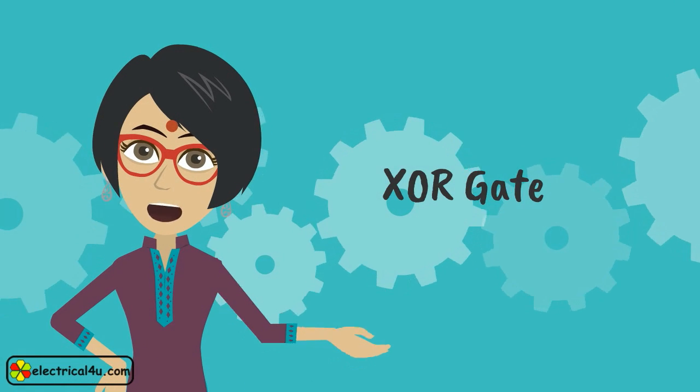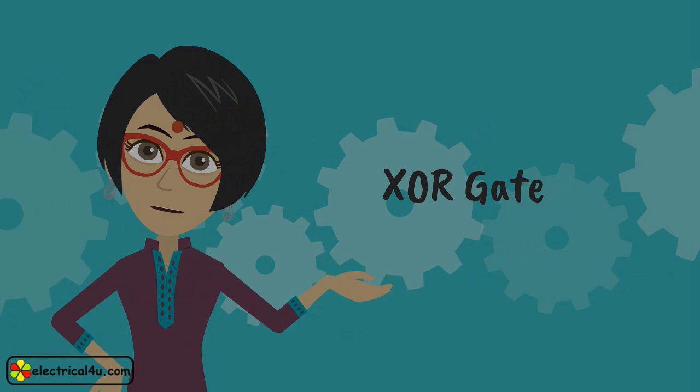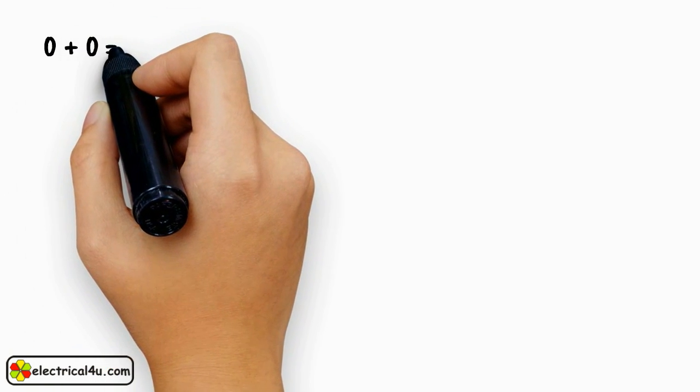Let us discuss about XOR gate. Modulo sum of two variables in binary system is like this. 0 plus 0 equals 0.